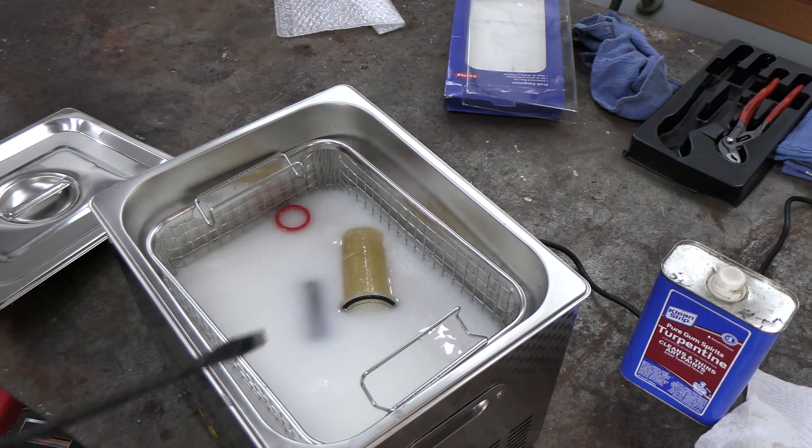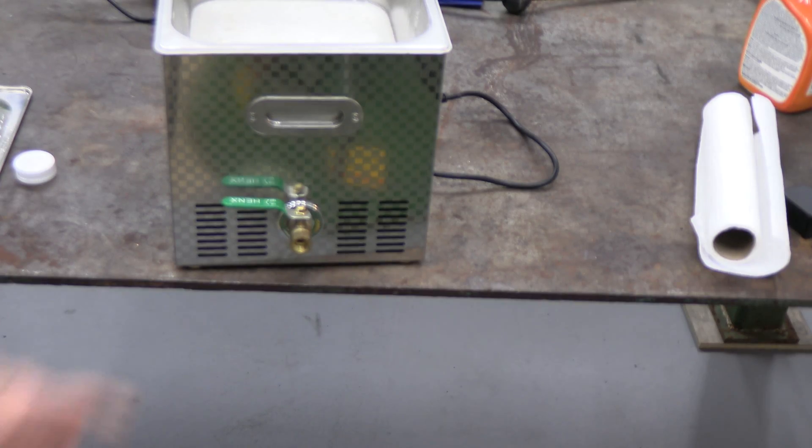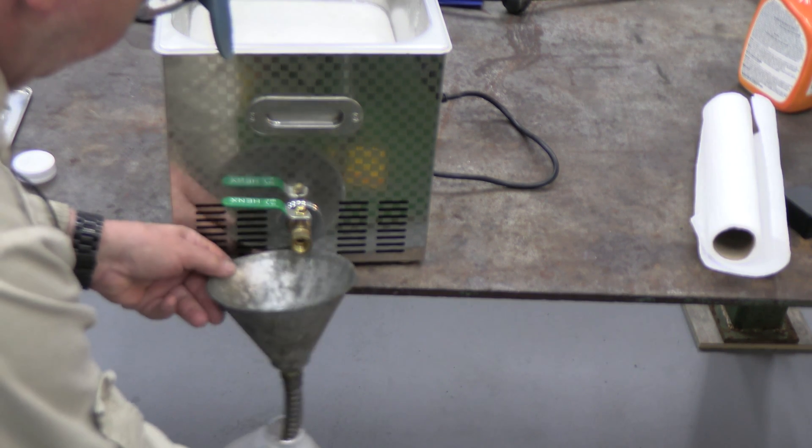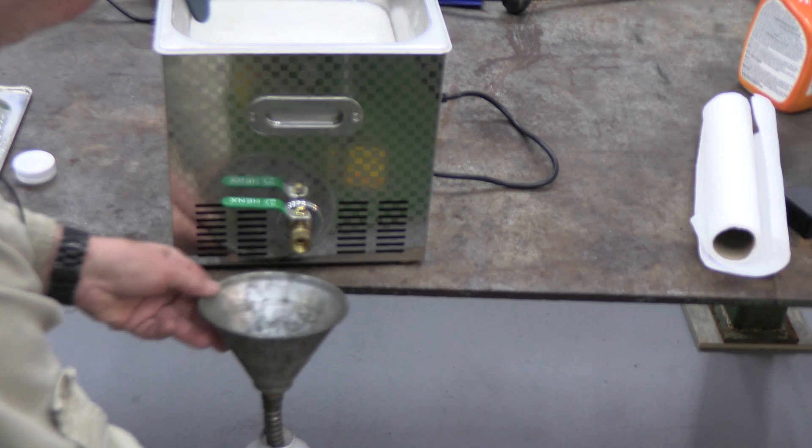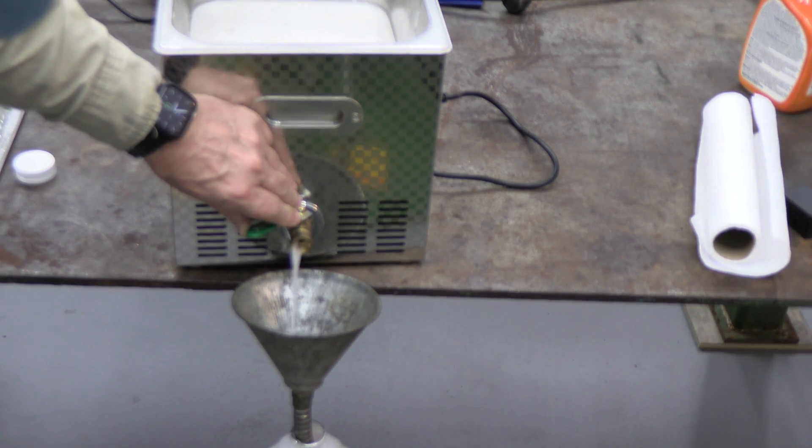You can see how it's foamed up that bath. That's a combination of turpentine and water. It has a very convenient ball valve if you want to empty it. So basically, you just get your funnel where you want it and open the ball valve. And it will drain.